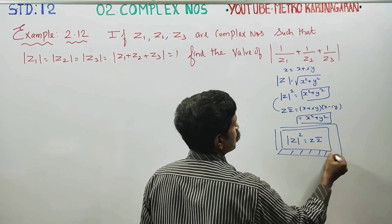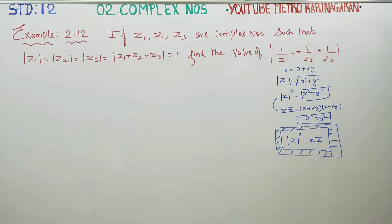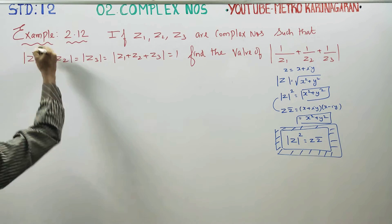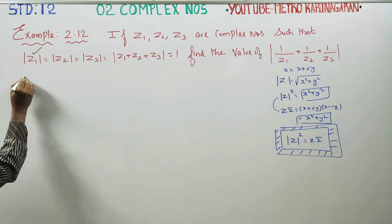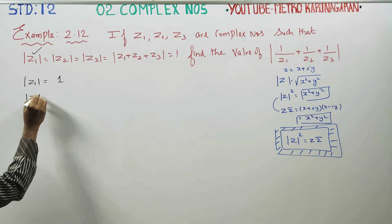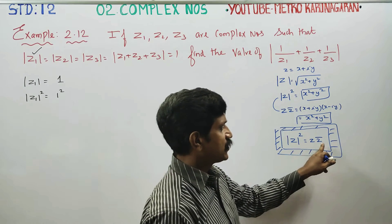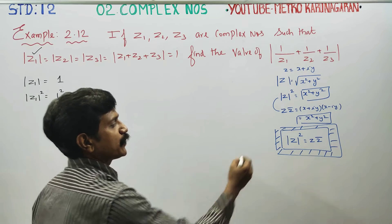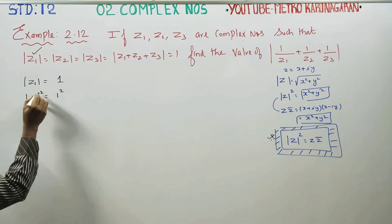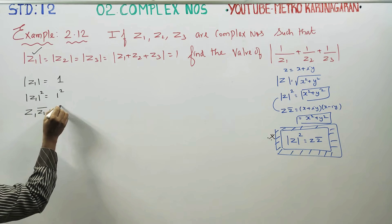I am going to use this property for this sum — a very important property. Modulus of Z squared is equal to 1. Modulus of Z1 is equal to 1, so 1 squared equals 1. Therefore, modulus of Z1 squared equals 1. Using the property, Z1 squared can be written as Z1 into Z1-conjugate, and 1 squared equals 1.